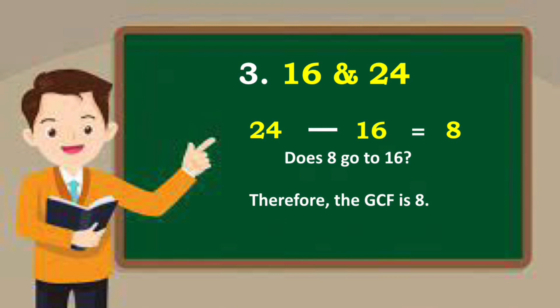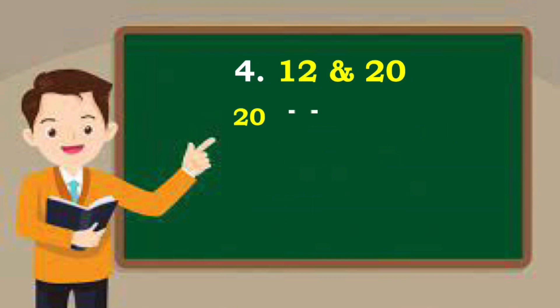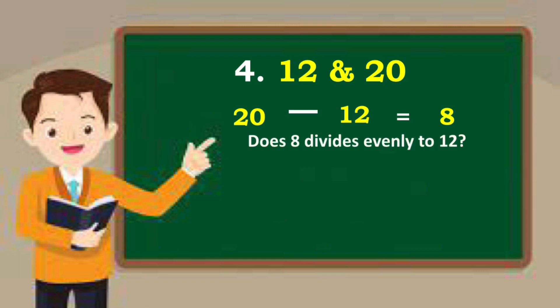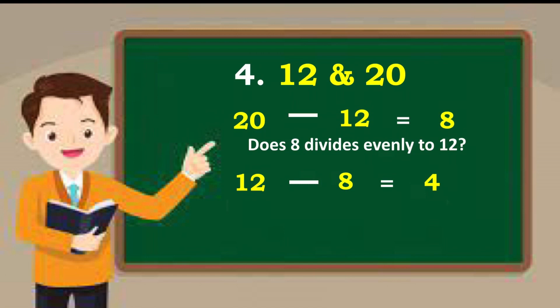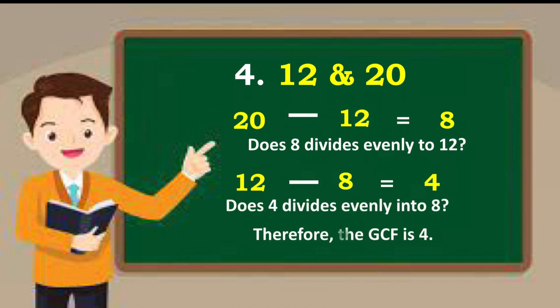How about 12 and 20? Subtract: 20 minus 12 is equal to 8. Does 8 divide evenly into 12? No. Take their difference again: 12 minus 8 is equal to 4. Does 4 divide evenly into 8? Yes. Therefore, 4 is the GCF.